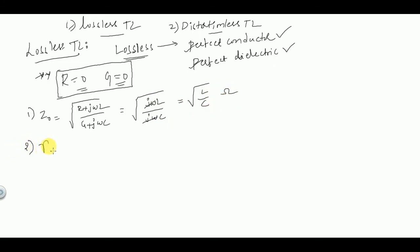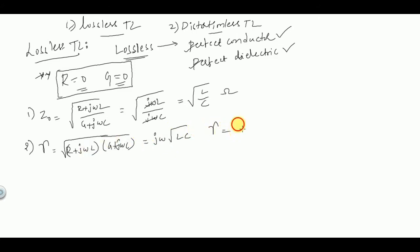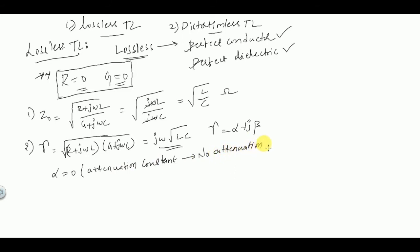The propagation constant gamma is given by the square root of (R + jωL)(G + jωC). Since R = 0 and G = 0, we get gamma equal to jω√(LC). Since there is no real part, the attenuation constant alpha is equal to 0, meaning there is no attenuation of the EM wave inside the transmission line — that is why it is called a lossless transmission line. The phase shift constant beta is given by ω√(LC) radians per meter.